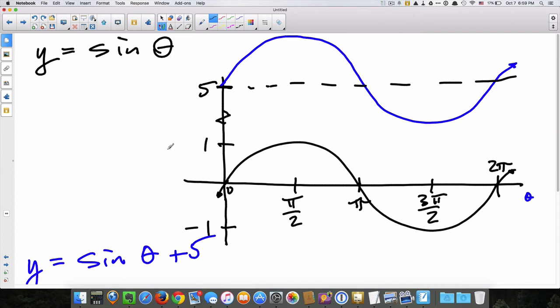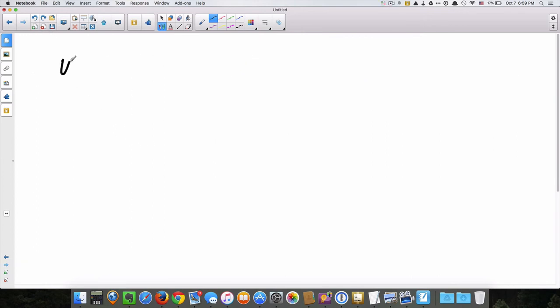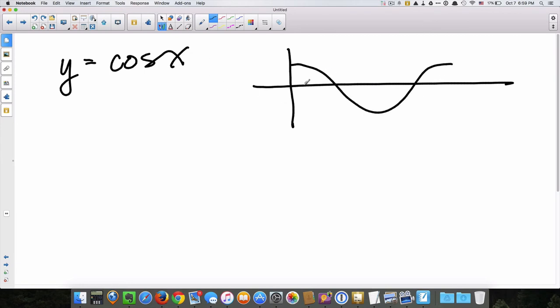Let's look at a horizontal translation. Y equals, let's use cosine this time. Y equals cosine x. That looks - parent function looks like this. And, of course, that's at 0, 2 pi, pi, pi over 2, and 3 pi over 2. So, that's what the parent function looks like.